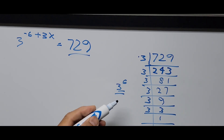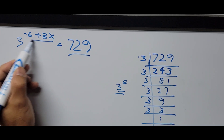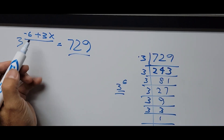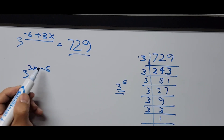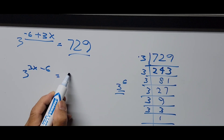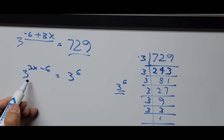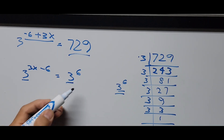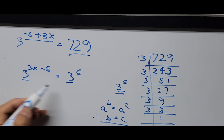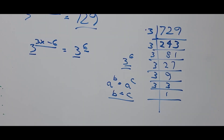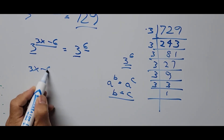We substitute 3 to the 6th power in place of 729. The equation now becomes 3 raised to (3x minus 6) equals 3 raised to the 6th power. We have achieved a common base. Using the exponent rule — if a raised to b equals a raised to c, then b equals c — we can equate the exponents. So 3x minus 6 equals 6.